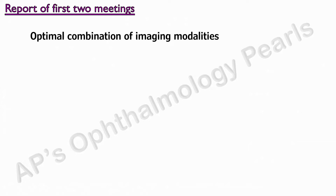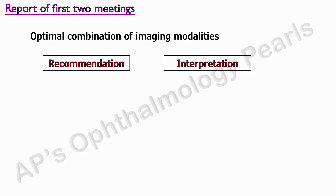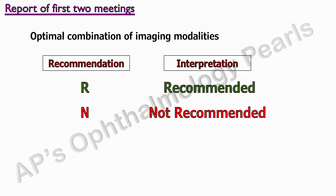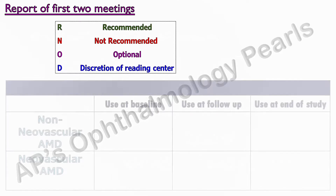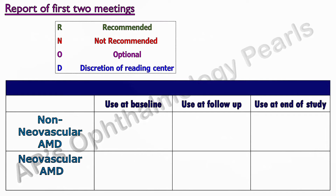The report of the first two meetings proposed the optimal combination of imaging modalities for use in future natural history and interventional clinical studies after discussing the advantages and disadvantages of the various options. For each imaging modality, one of four recommendations was given: R for recommended, N for not recommended, O for optional, and D for discretionary use of the reading center. The recommendations were given for use at baseline, at follow-up, and at the end of the study for 10 different imaging modalities in both non-neovascular and neovascular AMD.